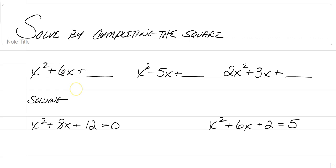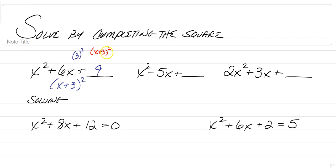So if we have x squared plus 6x, in order to do what's known as completing the square, what you're going to do is take half of the b value and square it, and that gives you 9. By doing that, you can write this as x plus half of the b value, which is 3, squared. So you're going to have x plus 3 squared, which if you multiply it out, x plus 3 times x plus 3, you would have x squared plus 3x plus 3x plus 9, which is x squared plus 6x plus 9.